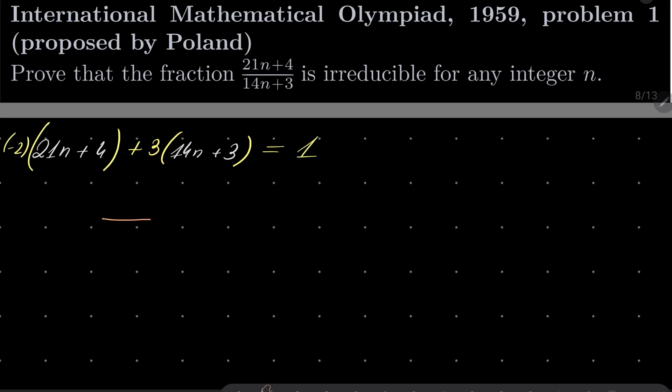Which means that gcd of 21n plus 4, 14n plus 3 equals 1 and we are done.